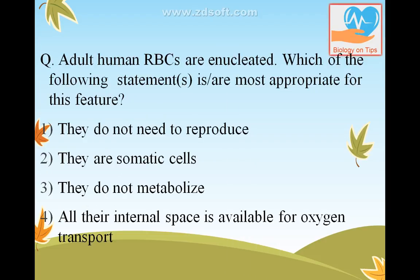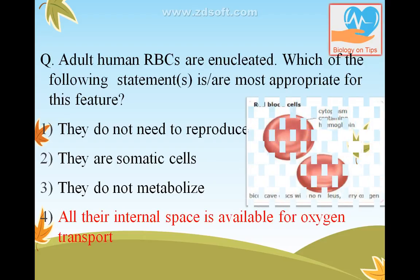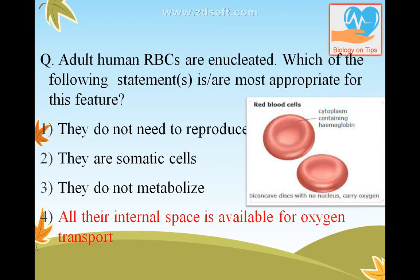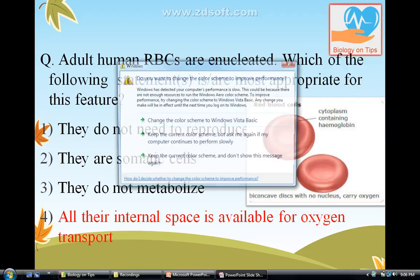Adult human RBCs are enucleated. The most appropriate reason for this feature is to have maximum amount of hemoglobin so they can carry maximum oxygen. The answer is: all their internal space is available for oxygen transport. Due to this characteristic, the nucleus also degenerates, along with mitochondria, due to which they undergo anaerobic respiration.